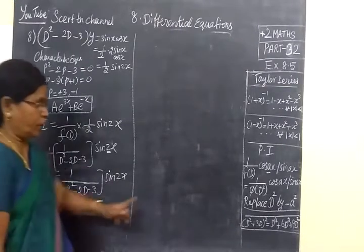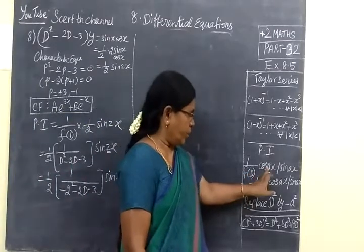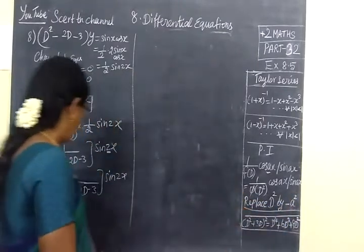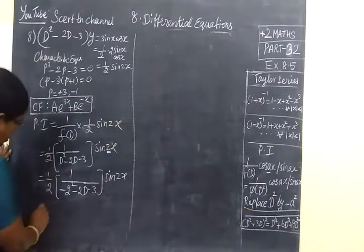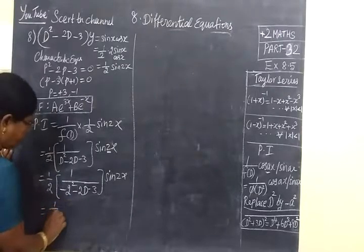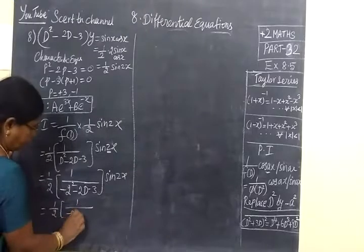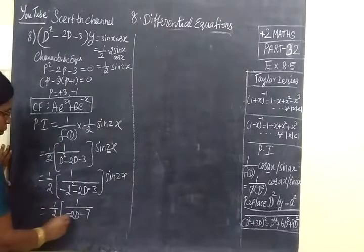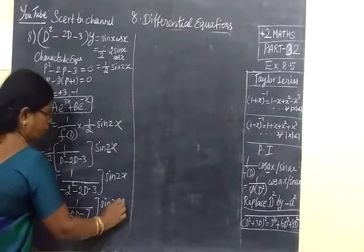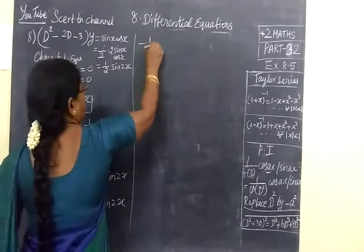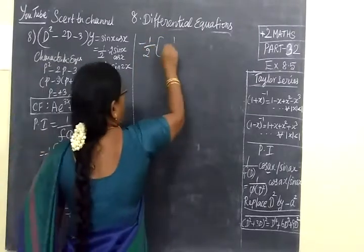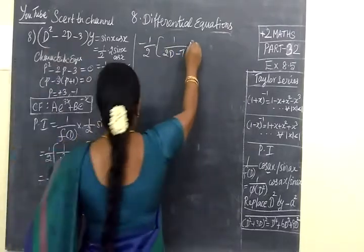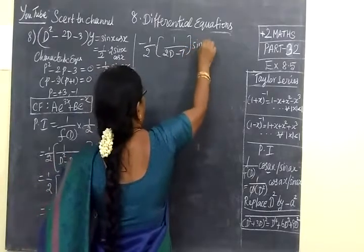The condition: 1 by F of D of sin, replace D squared by minus a squared. This equals 1 by 2, 1 by minus 2D minus 7. Isn't it?